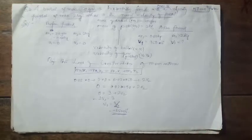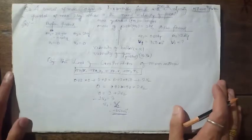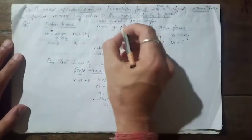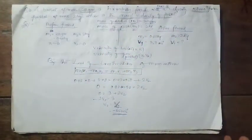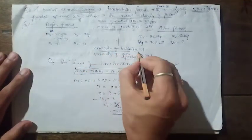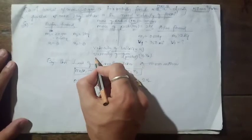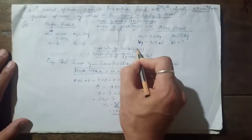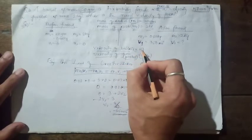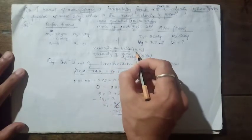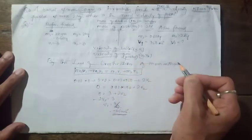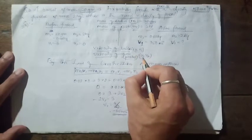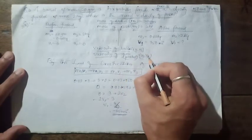Before firing, we write the given quantities: mass of bullet m1 = 20 gram, mass of pistol m2 = 2 kg. u1 is the initial velocity of the bullet, v1 is its final velocity; u2 is the initial velocity of the pistol, v2 is its final (recoil) velocity.